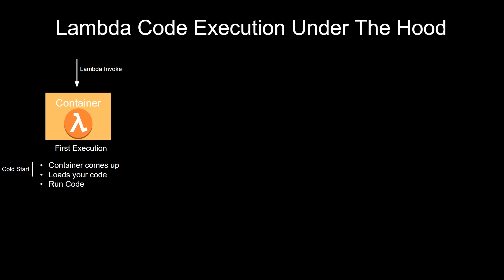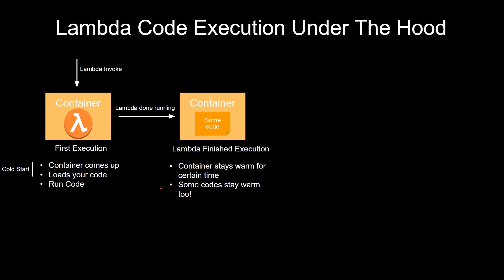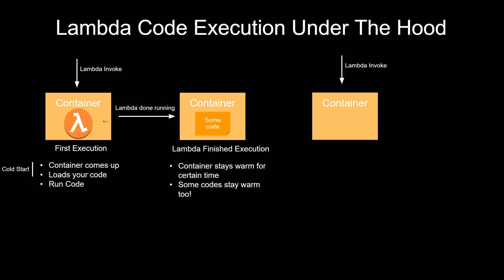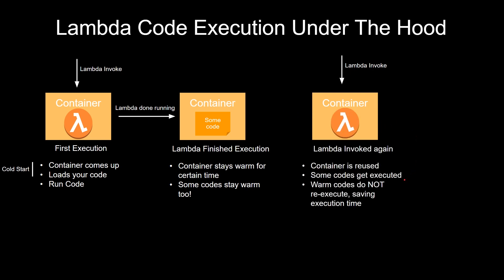Cold start is basically the time between when the function actually gets invoked and when the function actually starts running. Now, even when the Lambda is done running, this container still stays up for a certain time, and some code stays warm too. So if the same Lambda gets invoked again within that time window, the same container will get reused, and warm code does not re-execute — this saves execution time.